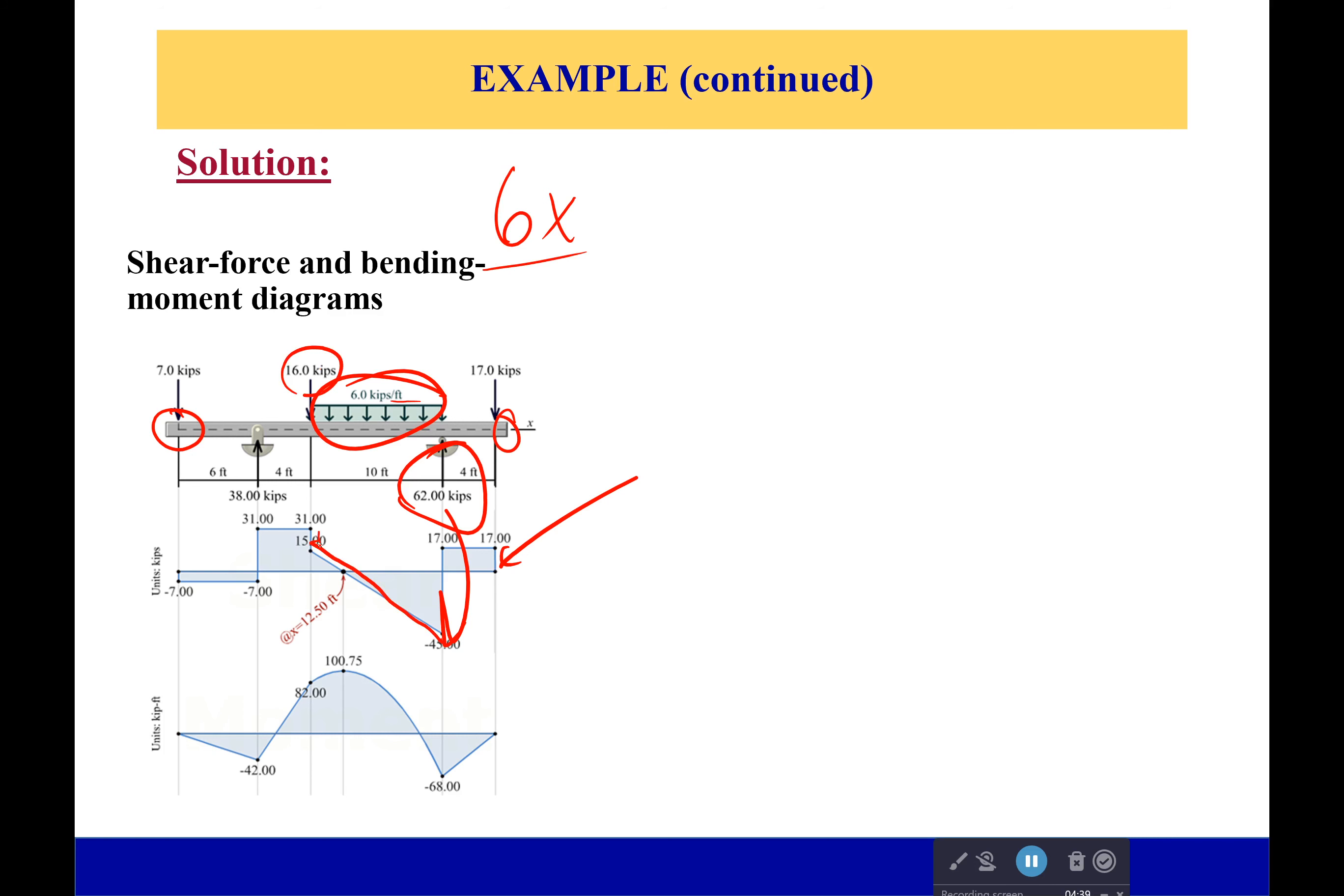Then we're going to jump up 16 to 31, go over to our next support, jump down 38, putting us at negative 7, and what do you know, we're right back to zero. You start from one side and go to the other one. You can solve it; the only big thing you have to do here math-wise is figuring out what are these reaction forces. That's probably the hardest thing for this. To do that, you're simply doing your sum of the forces in the y direction and sum of the moments about a particular point.